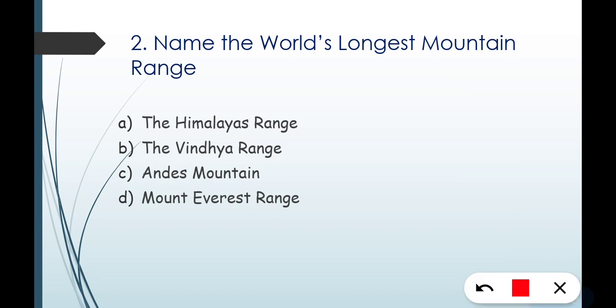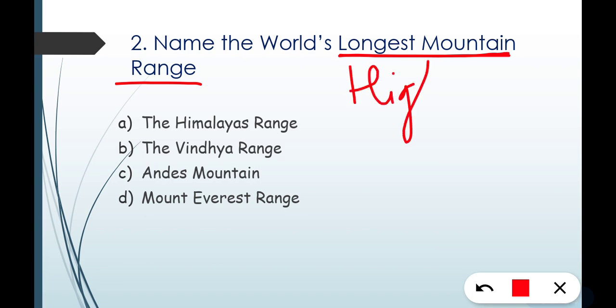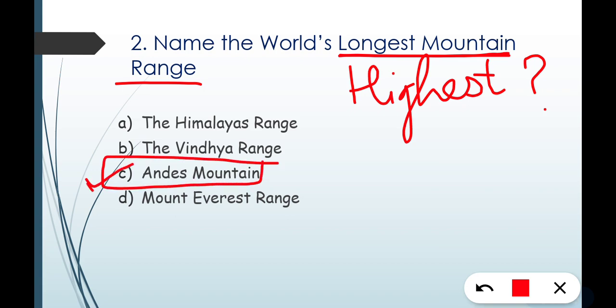Question number two: name the world's longest mountain range. Options are: Option A — Himalayas range, Option B — Vindhya range, Option C — Andes Mountains, Option D — Mount Everest range. The correct answer is Option C, that is Andes Mountains. It's a simple fact to remember.